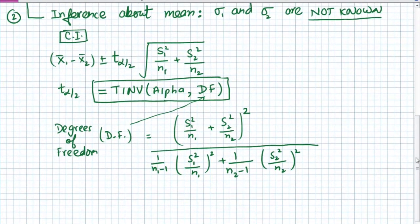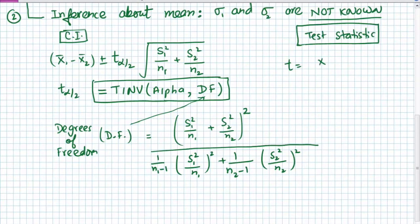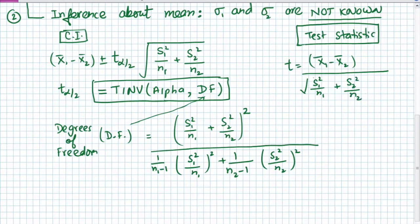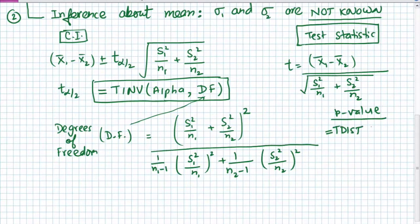For the test statistic in the unknown sigma case, we use the t test statistic: x1-bar minus x2-bar divided by the square root of s1 squared over n1 plus s2 squared over n2. When doing the hypothesis test and calculating the t value in step three, you can use the Excel function T.DIST with the calculated t value, the degrees of freedom, and put 2 if it is a two-tailed test.